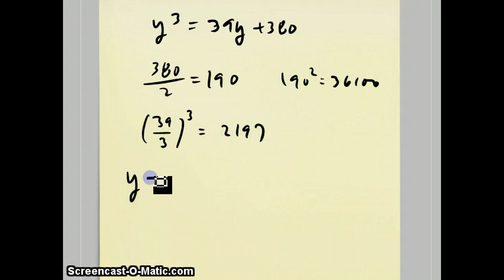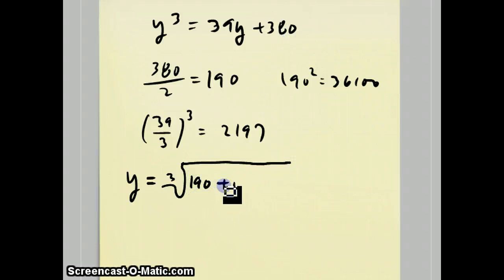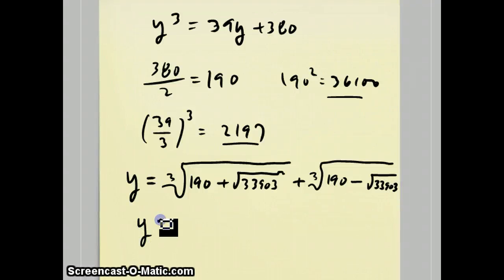When you do this, the formula says that the answer is going to have this form. It's 36,100 - 2,197 is 33,903. That's only part of the answer. The other part is almost the same thing. The only difference is that this is a minus.